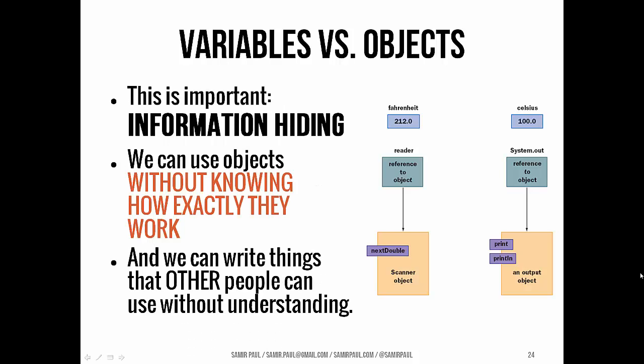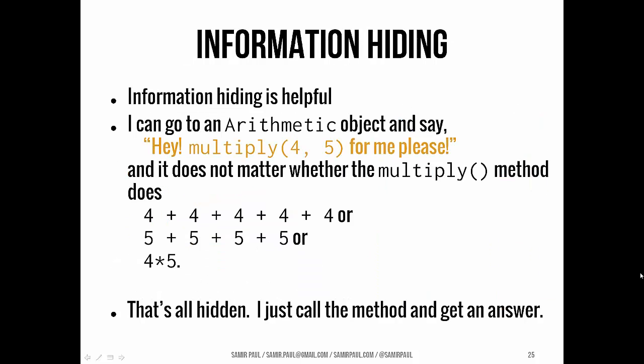Now this is really important because what this shows us is the principle of information hiding. We're using that Scanner object without knowing exactly how it works. That's really powerful because that means that we can later write things that other people can use without them having to worry about how we did it. As long as they can trust that it works, as long as we've tested it and we can guarantee that it works properly. Well, they don't have to know the nitty gritty of how something is implemented. You know, information hiding is really helpful.